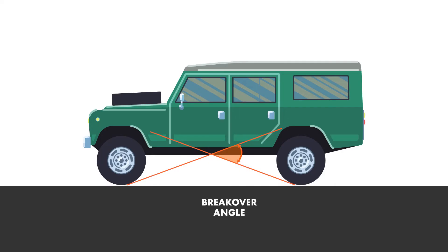The last angle we will talk about is breakover angle. Breakover angle is the angle that your vehicle can safely and cleanly cross over when it goes over some type of peak — so when you have one wheel on one side of the peak and the other wheel on the other side of that peak.